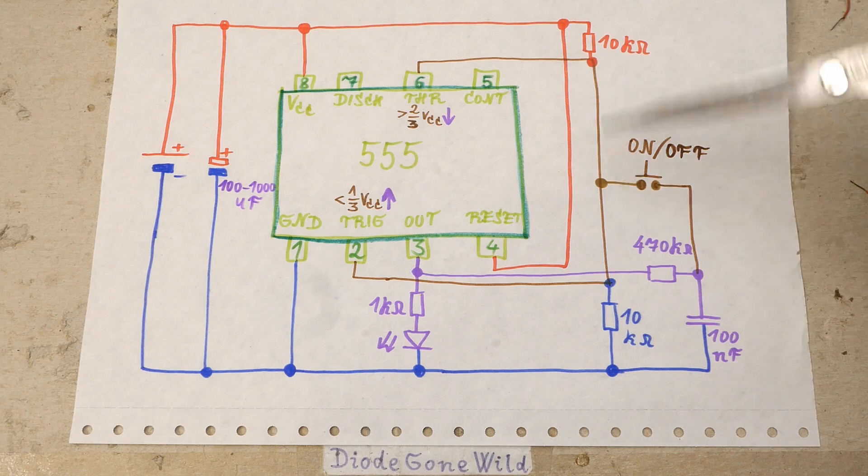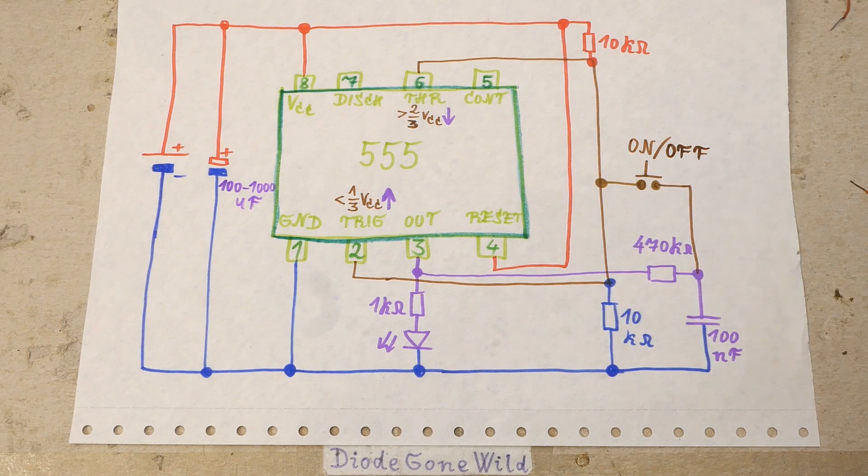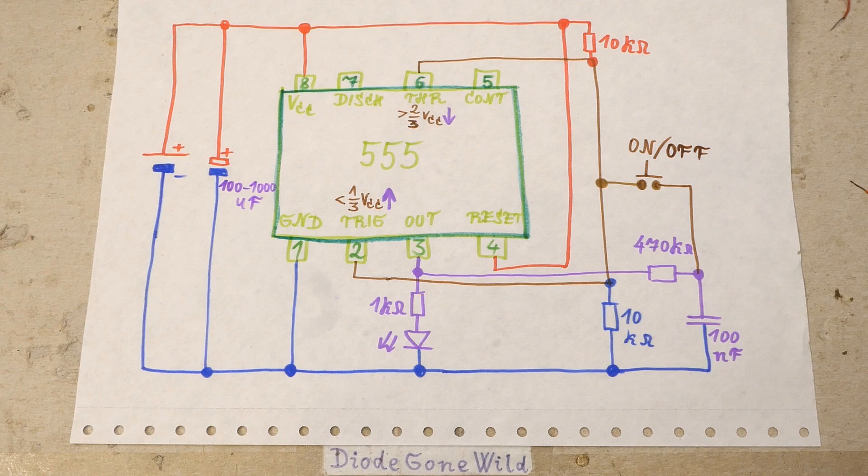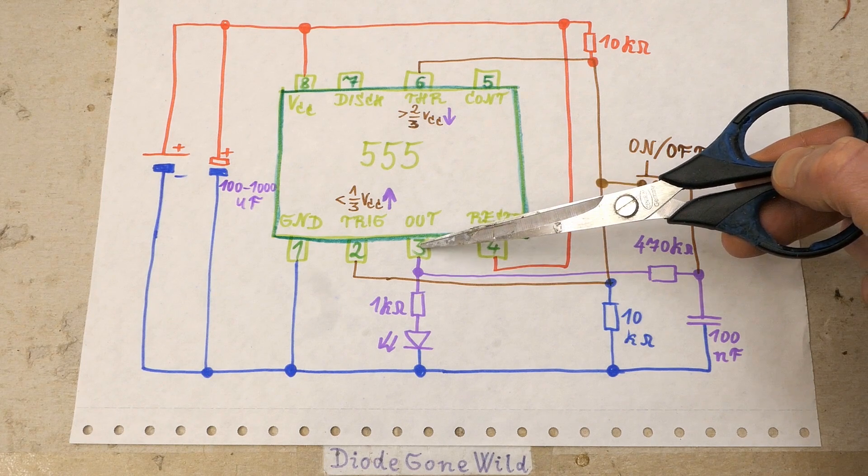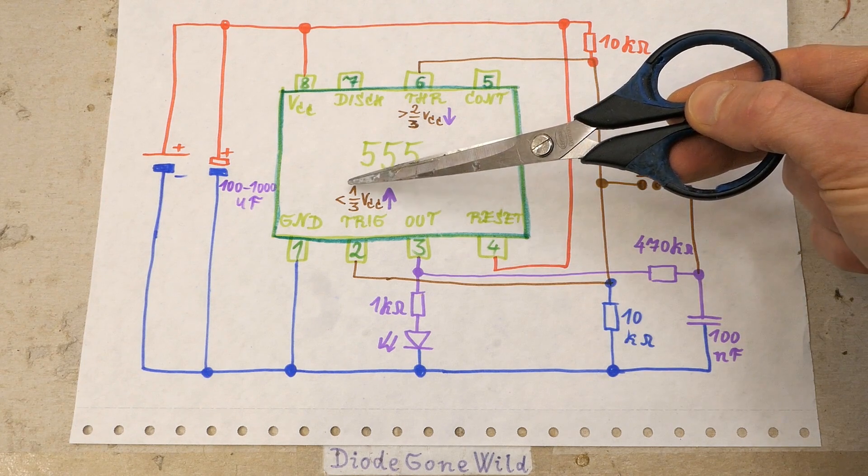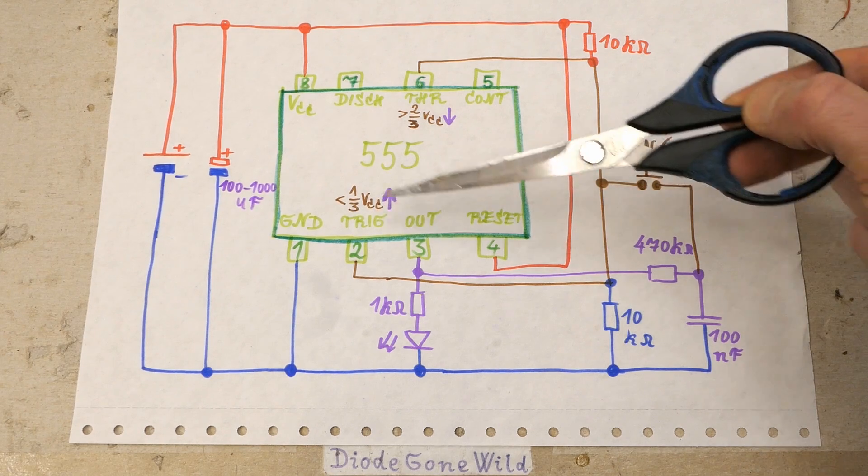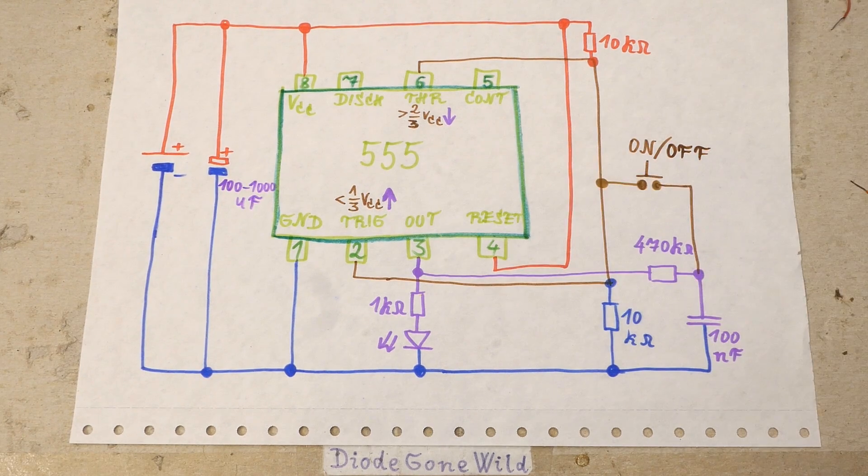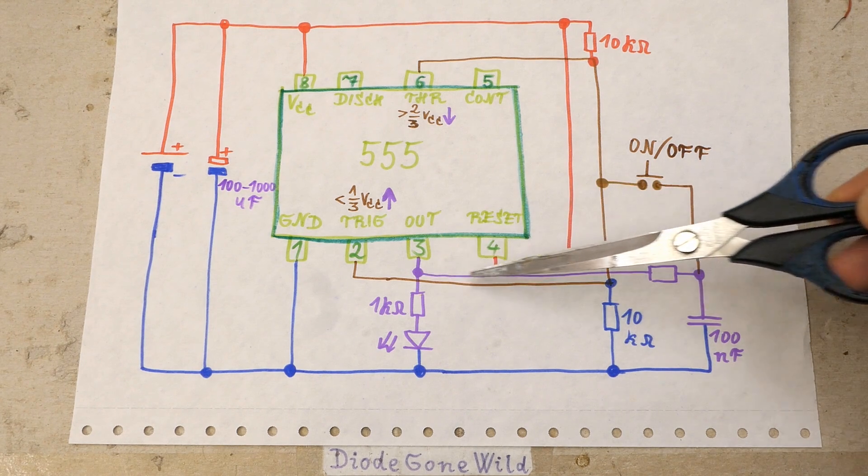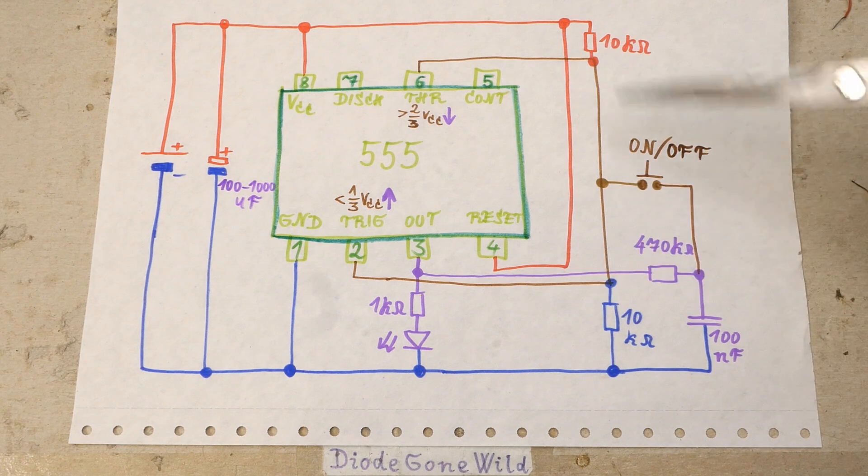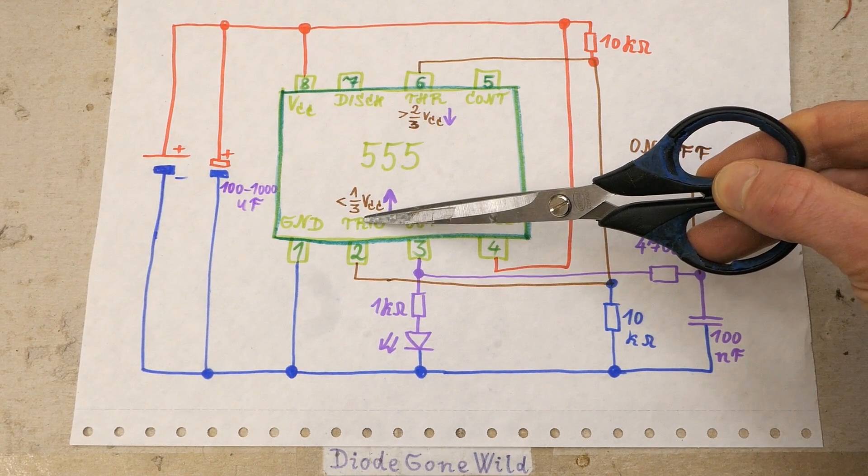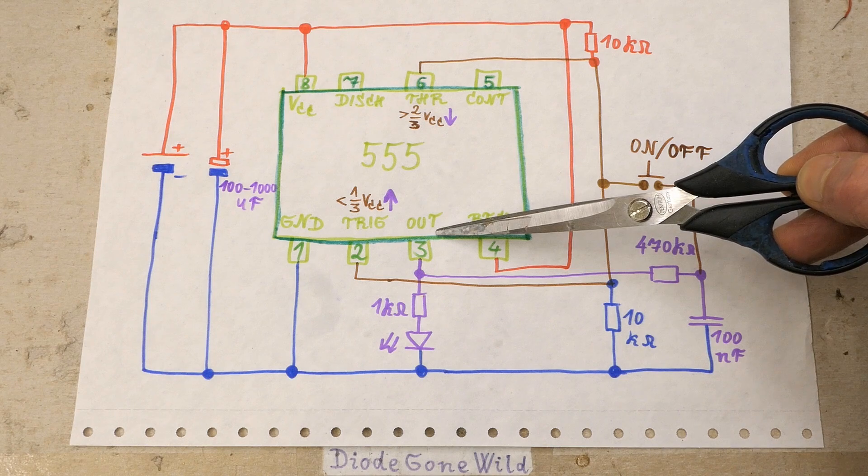And they're connected to a resistive divider of two equal resistors. And this normally keeps the inputs at half the supply voltage. And the input 6 requires more than two-thirds of the supply voltage to make the output go low or turn off basically. And the input 2 requires the voltage to go below one-third of the supply voltage to flip the output high or turn on. So these resistors basically keep the voltage at the inputs at a level where none of the inputs flips the output. When it's off, the output is low, it discharges this capacitor via this resistor and so pressing the button basically brings zero volts to the inputs and it activates the input 2, which if the voltage is low enough, flips the output up and now it's on.